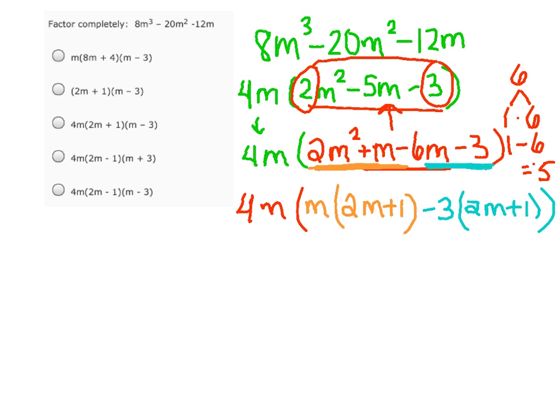And now all that's left to do is rewrite this, and so our 4m is still out in front. And now we can factor out this 2m plus 1, and what's left is m minus 3.